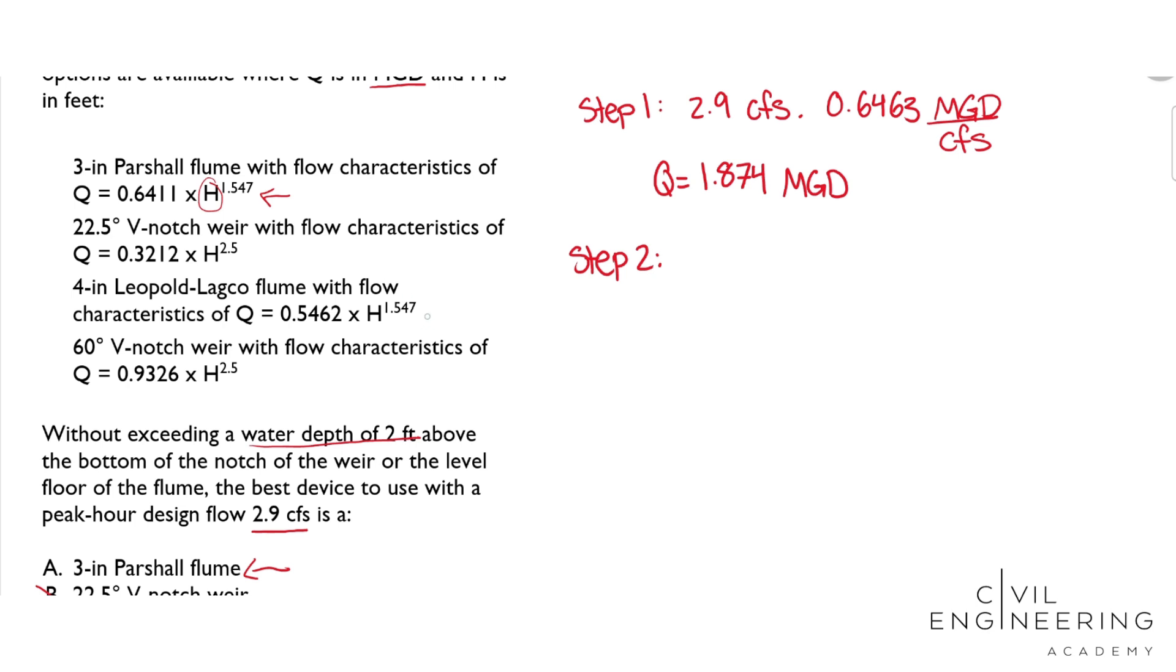We're just going to use these, and we'll start with A. We get Q of 1.874 MGD equal to 0.6411 times H to the 1.547. We'll divide both sides by 0.6411.